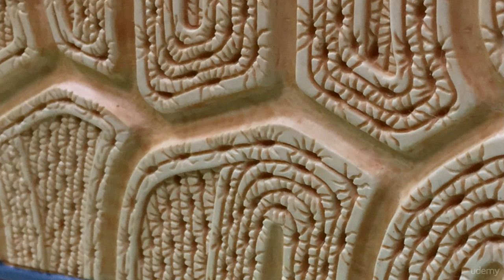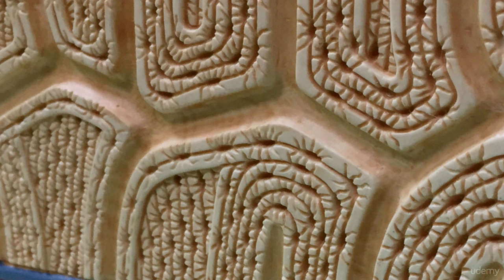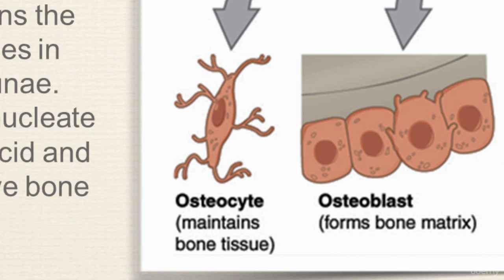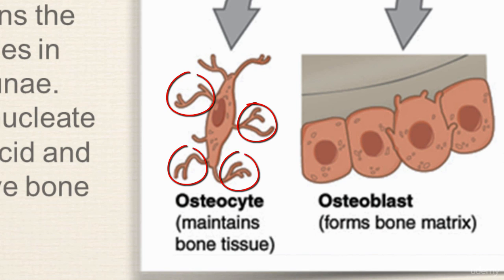If you remember when we looked at the osteon, it had little dished-out areas with little legs on it — they looked like ants crawling all over the place. Those little dished-out areas were the lacunae, and it's the osteocytes that live in the lacunae. The canaliculi are those little things that looked like the legs coming off. As you can see on this osteocyte, it has little projections or appendages that go off into the canaliculi.